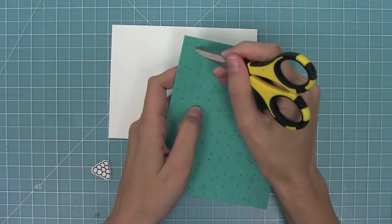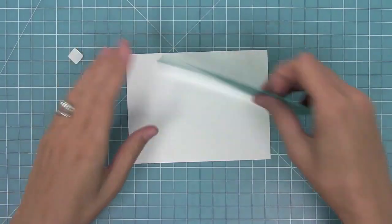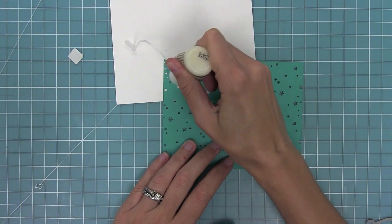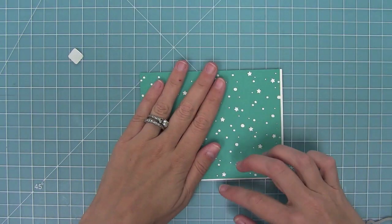Here I went ahead and used the Snowy Backdrop Die to cut this turquoise piece of cardstock. I'll push out all those little pieces and save them for a shaker card, and then I trimmed my piece down to five and a quarter by four.